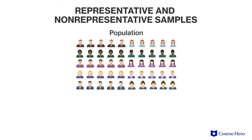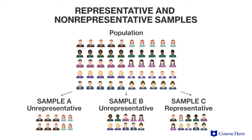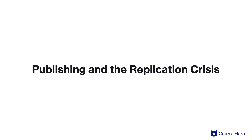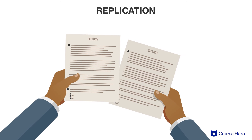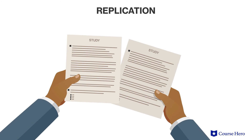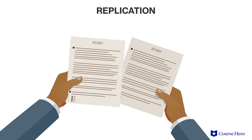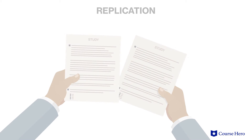For example, using undergraduate students for a study as a stand-in for the general adult population. Sample size, or the number of people in our study, is also important. Results based on small samples often fail to be replicated in larger studies. This idea of replication is an important one, as it is the cornerstone of scientific studies to be able to reproduce results.